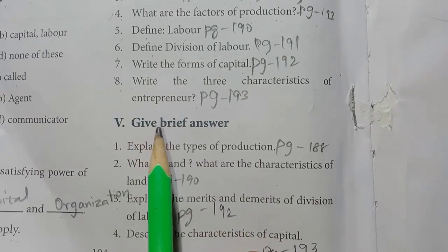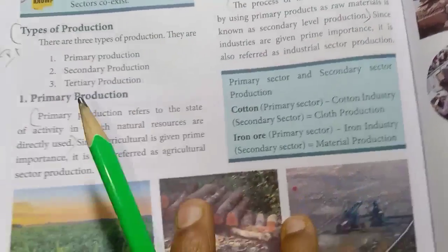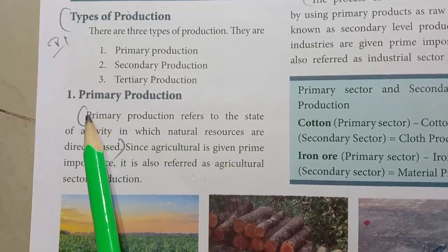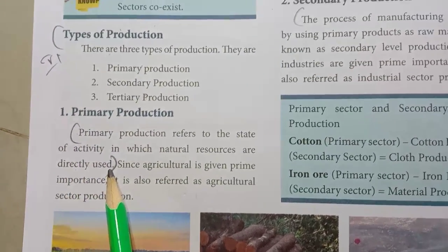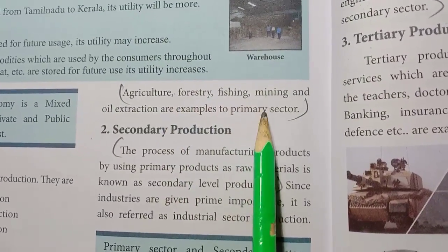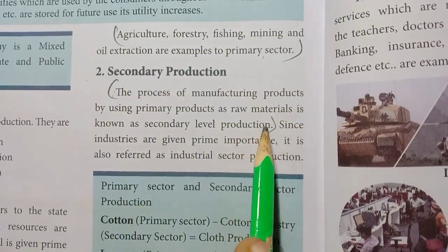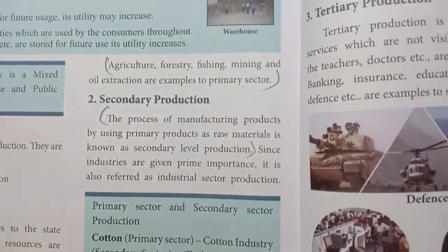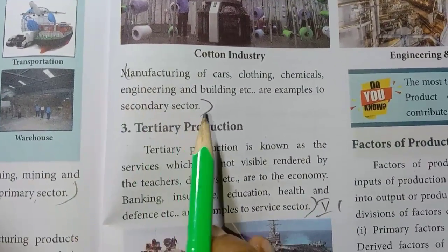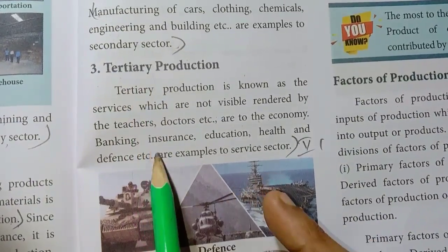Moving to Roman No. 5, Give a Brief Answer. First one: Explain the Types of Production. Page No. 188. There are three types of production. Primary Production — directly used, examples: Agricultural, Forestry — write three lines. Secondary Production — secondary level, manufacturing sector, page 189 — write two lines with example. Tertiary Production — write five lines fully.